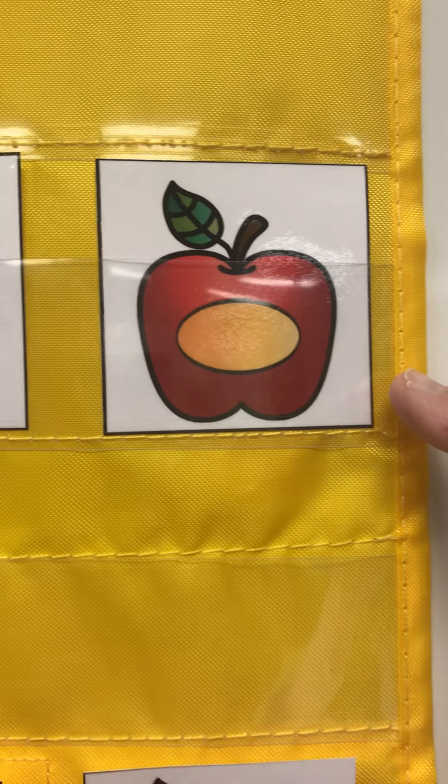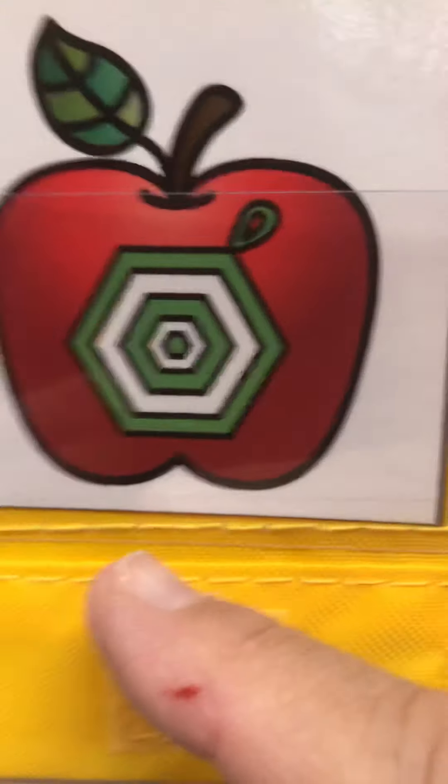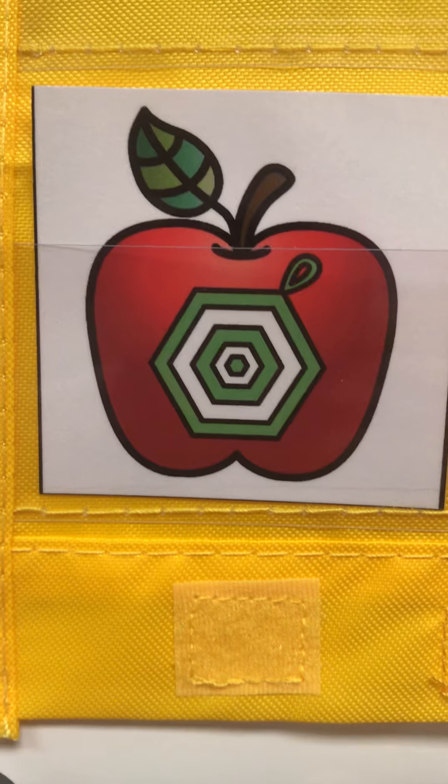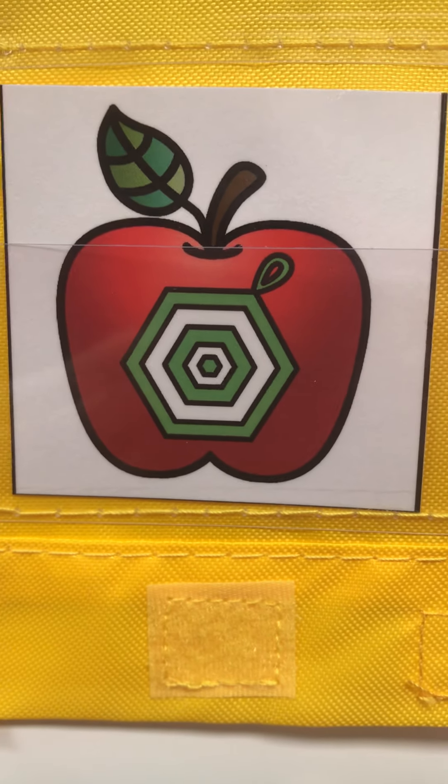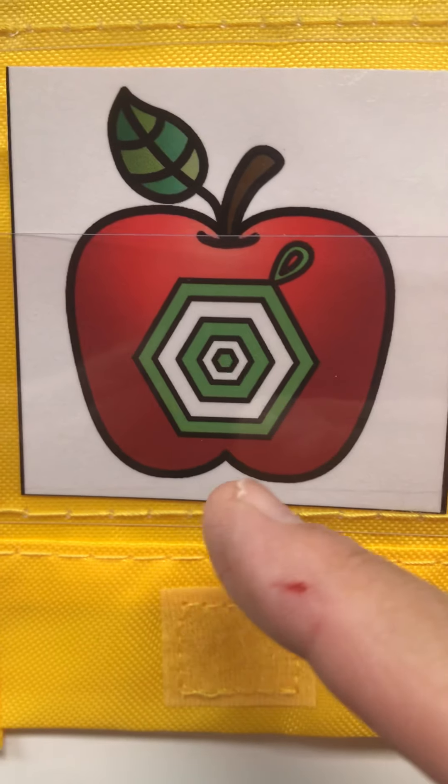Triangle. Ooh, that looks like an egg. It's an oval. Oh my goodness. Do you remember what that one is? It has six sides.